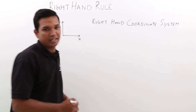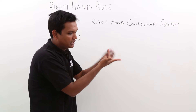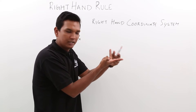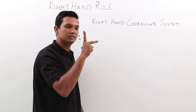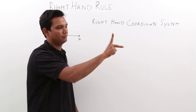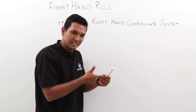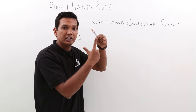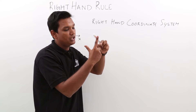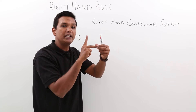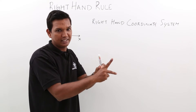Now let us understand what is a right hand coordinate system. If I take my right hand and make the thumb, forefinger, and middle finger perpendicular to each other — all three should be perpendicular to each other. The right hand coordinate system says that your forefinger should point in the direction of the x-axis, your middle finger should point in the direction of the y-axis, and your thumb should point in the direction of the z-axis.